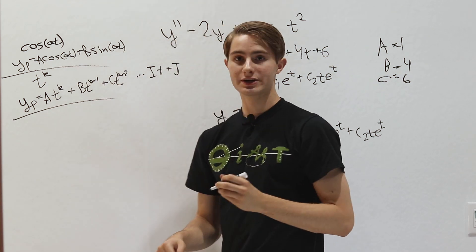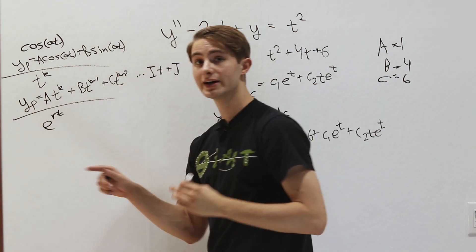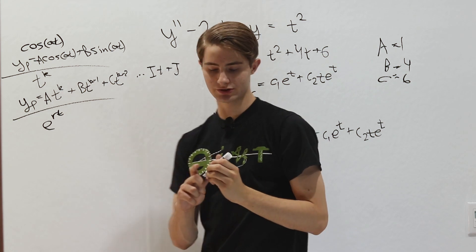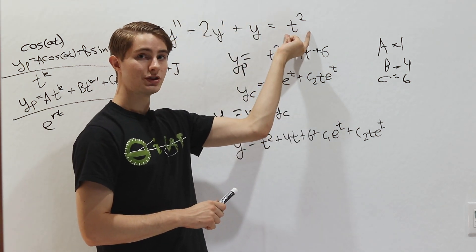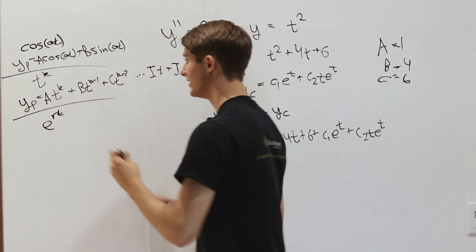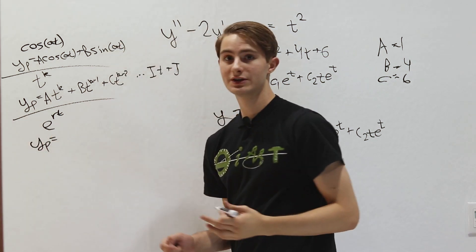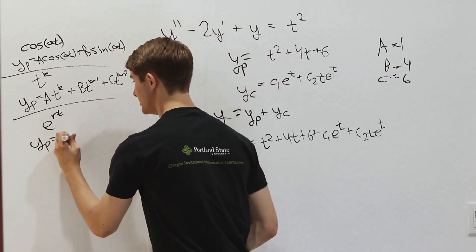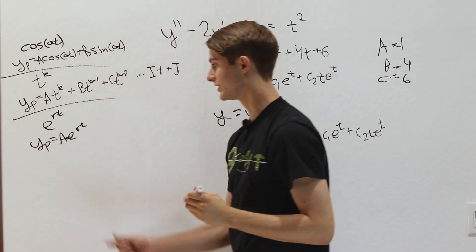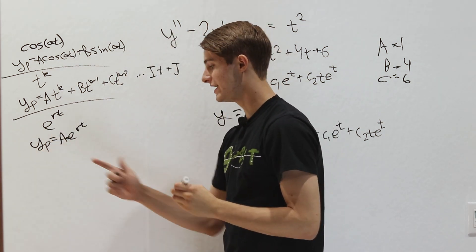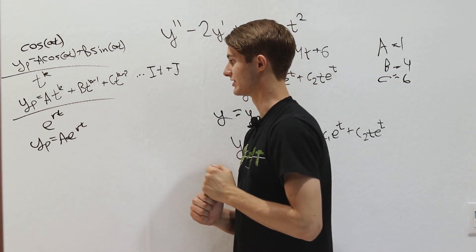For e to the rt on the right side of the equation — not a homogeneous solution — the question is which function's derivatives equal e to the rt. The answer is e to the rt itself, so you guess the particular solution is a times e to the rt and solve for the constant.